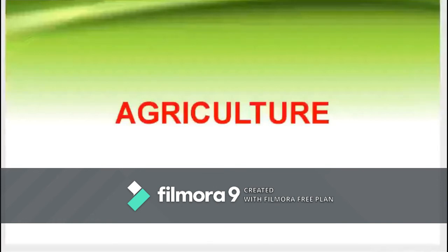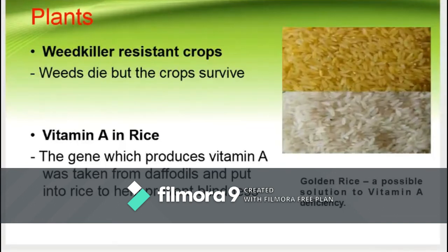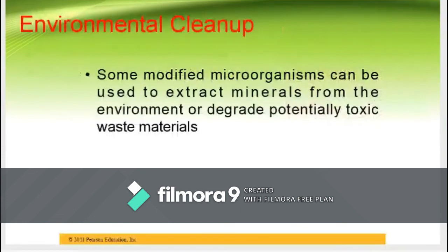Agriculture has also reaped considerable benefits from DNA technology, including the improvement of animal breeds and crop plant varieties, such as weed-killer-resistant crops where weeds die but crops survive. Golden rice is assumed to be a possible solution to vitamin A deficiency — the gene which produces vitamin A was taken from daffodils and put into rice to help prevent blindness. DNA technology also helps in increased milk production in cows, disease resistance, insect resistance, herbicide tolerance in crops, delayed ripening of fruits, and environmental cleanup where modified microorganisms degrade potentially toxic waste materials.